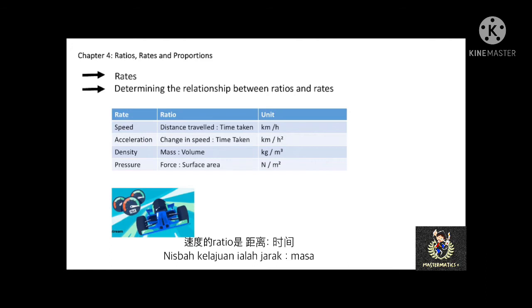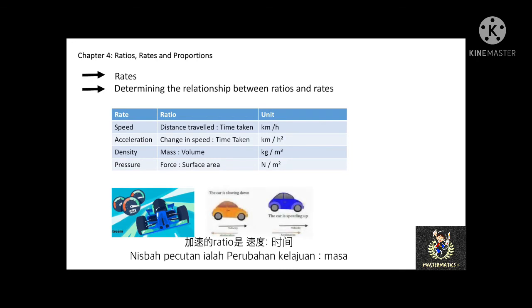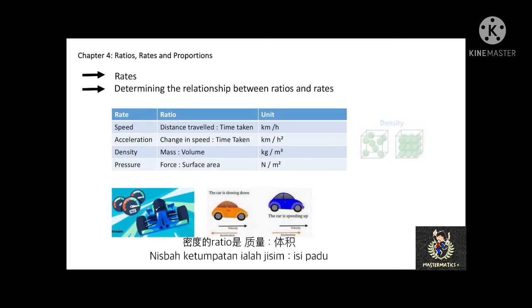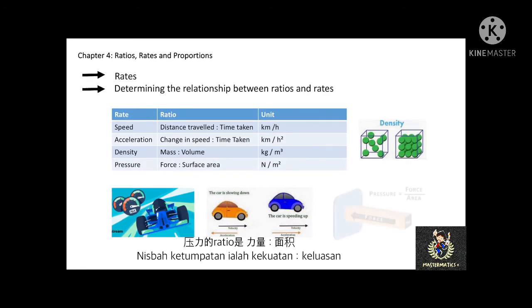Depending on the units, distance can be in km or meters, and time in hours or seconds. For acceleration, the ratio is final speed minus initial speed over time taken. For density, the ratio is mass over volume — mass in kg or grams, volume in cubic meters, cubic cm, or cubic millimeters. For pressure, the ratio is force over surface area — force in newtons, area in square meters or square centimeters.